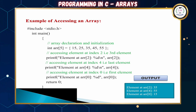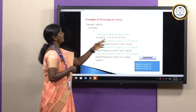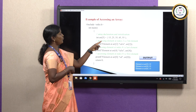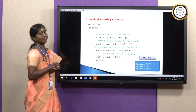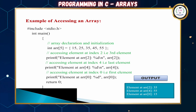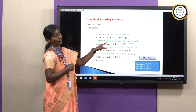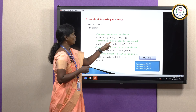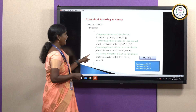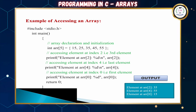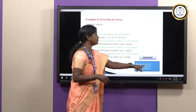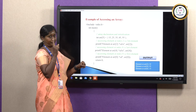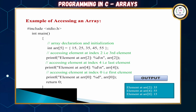In the sample C program, 5 elements 15, 25, 35, 45, 55 are assigned to int ARR[5]. Accessing ARR[2] gives the third element, which is 35. ARR[4] gives 55 — counting from index 0, 1, 2, 3, 4. ARR[0] gives the first element, which is 15.